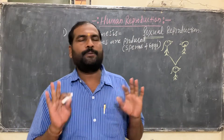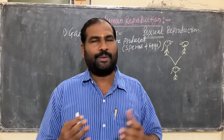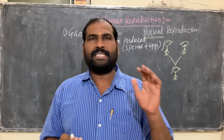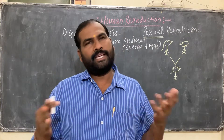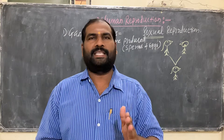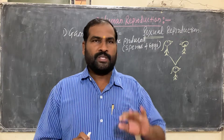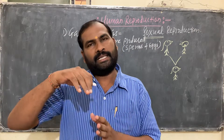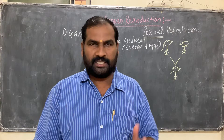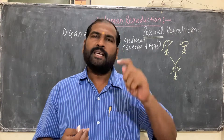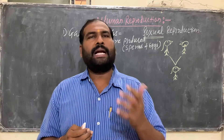In a human male, there is the testes — the primary sex organ, also called the gonads — in which sperm is formed. The testes is the male gamete-producing organ. In a female, there is the ovary, which produces eggs — the female gametes. Human beings are unisexual; the male individual possesses the male reproductive system and the female individual possesses the female reproductive system. The testes and ovaries are the primary sex organs where gametes are produced.